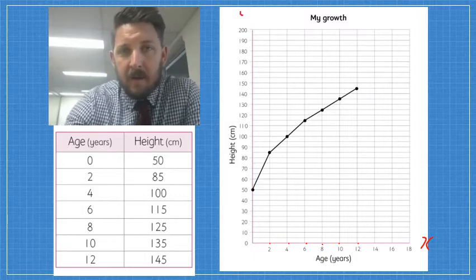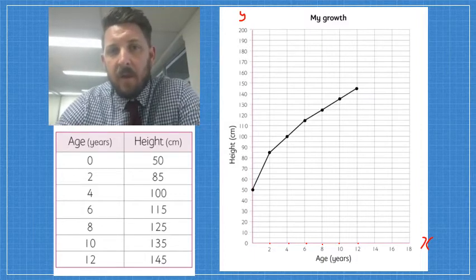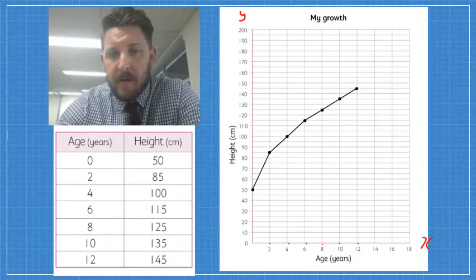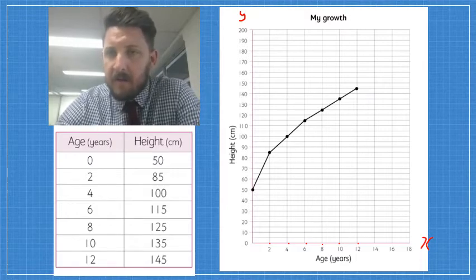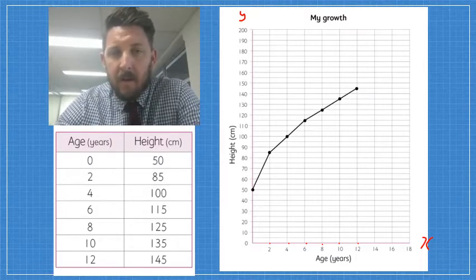On our y-axis, I'll be looking to make sure that is labelled as well, with the right gaps measured out, as well as the right class intervals. So you can see that my class intervals on my y-axis are going up in 10.